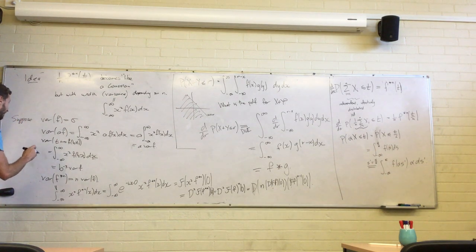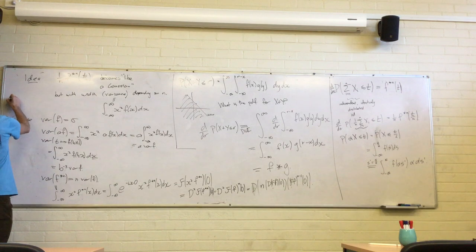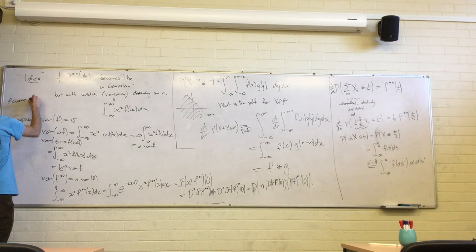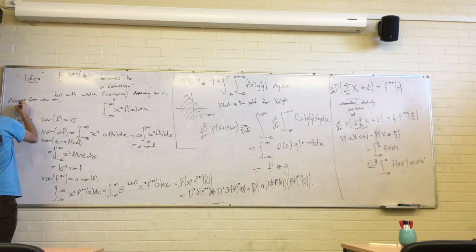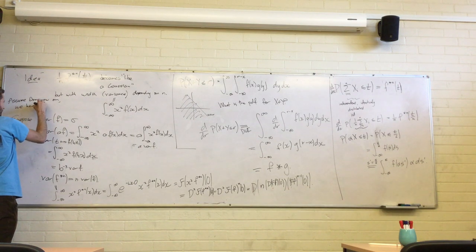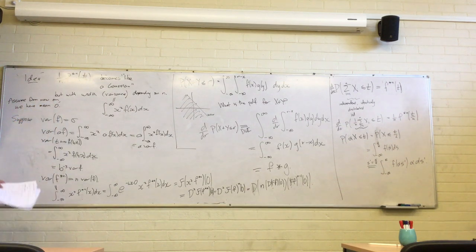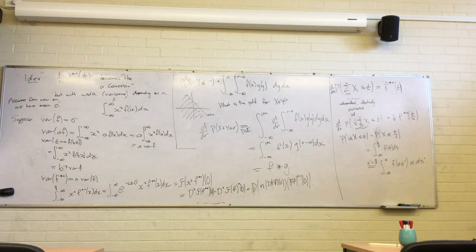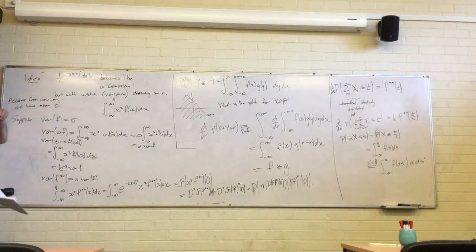That's a good point — let's assume from now on that we have mean zero. All our probability distributions will just have mean zero, so that problem goes away. The definition of variance doesn't change that.